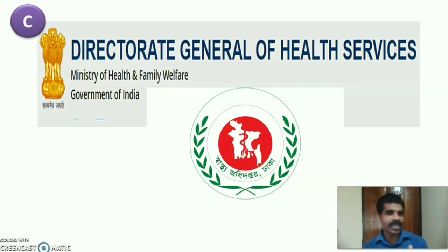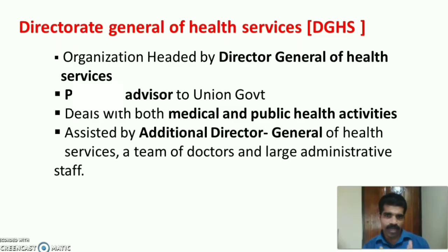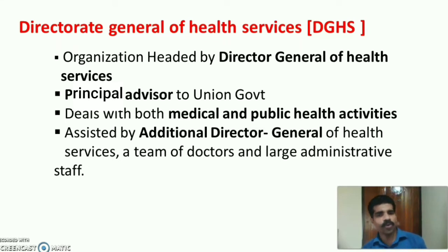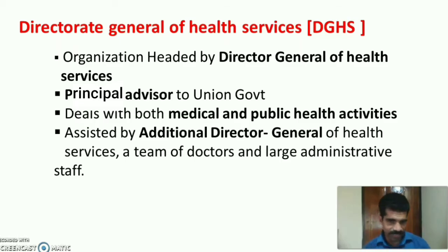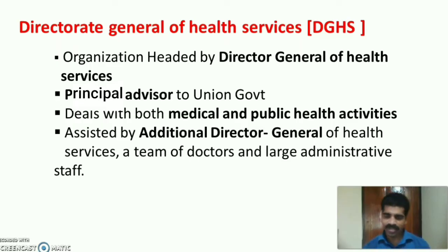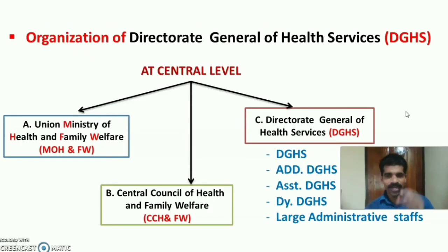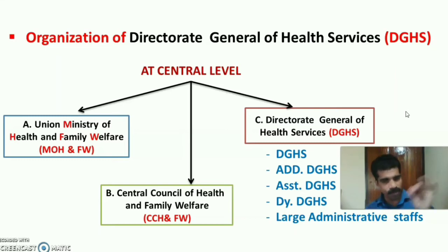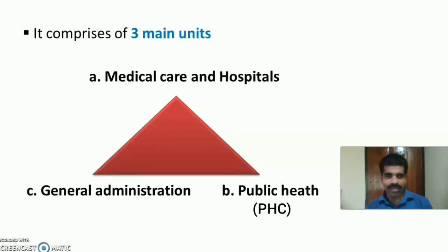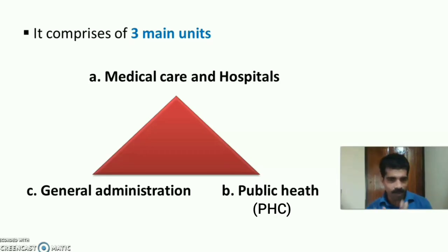The third organization at the central level is the Directorate General of Health Services (DGHS), headed by a Director General of Health Services, who is the principal advisor to the union government on health matters. The DGHS deals with both medical and public health activities. It is assisted by Additional Director General, Assistant Director General, Deputy Director General, and large administrative staff. The DGHS includes three main units: Medical Care and Hospitals, Public Health, and General Administration.